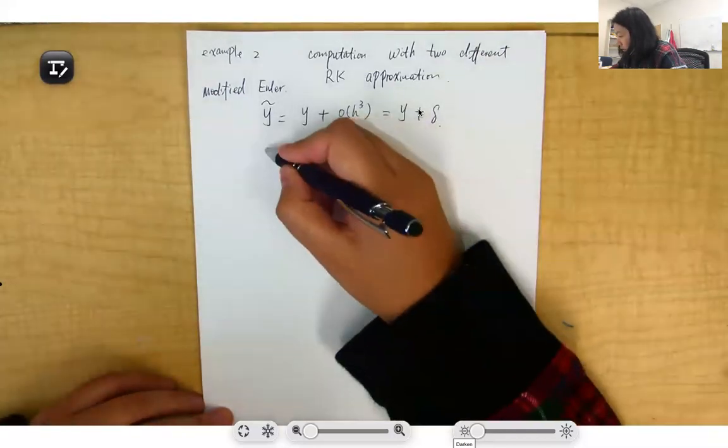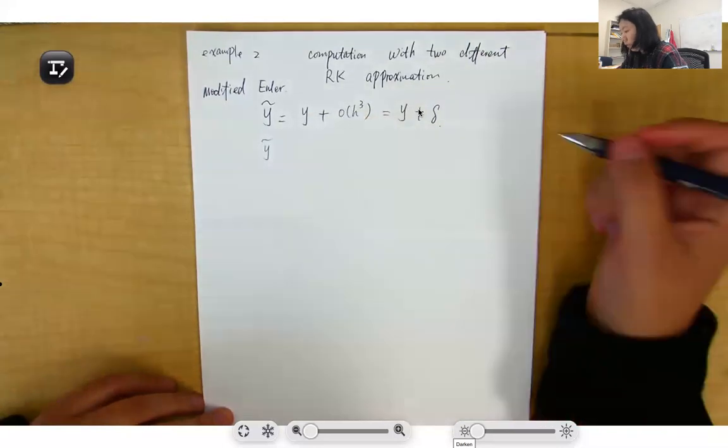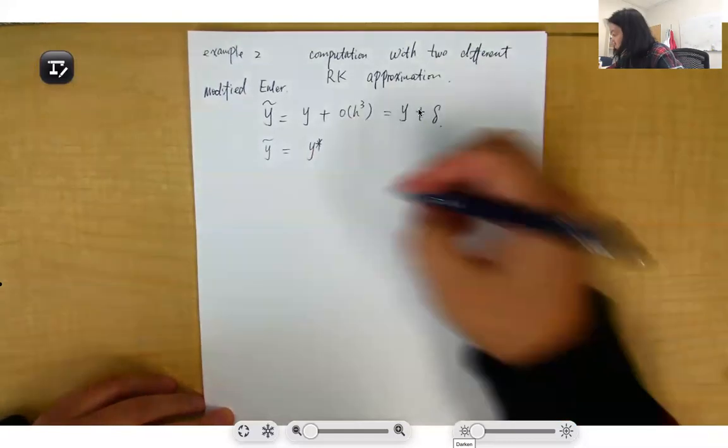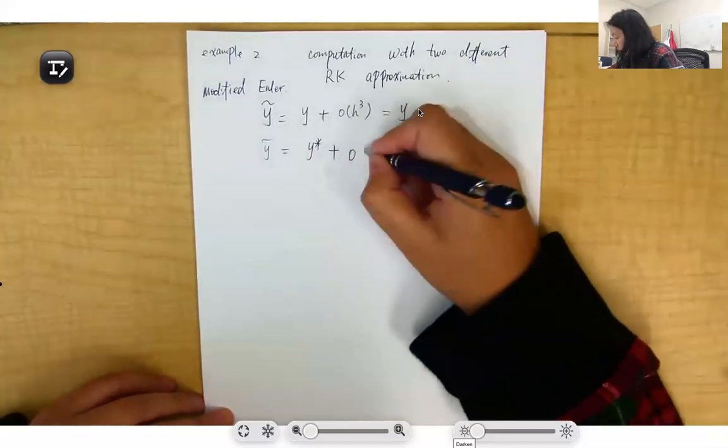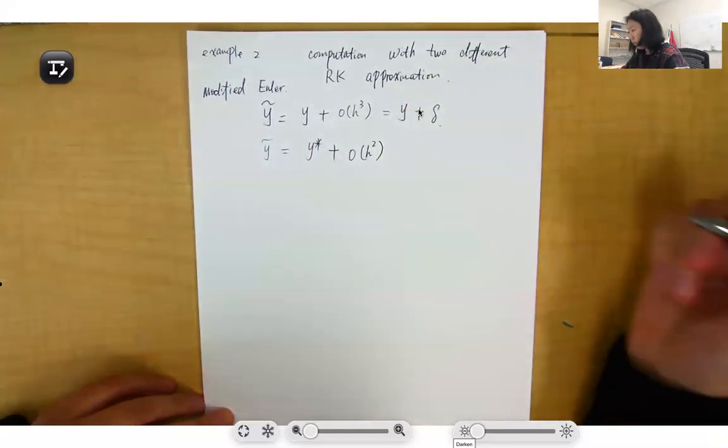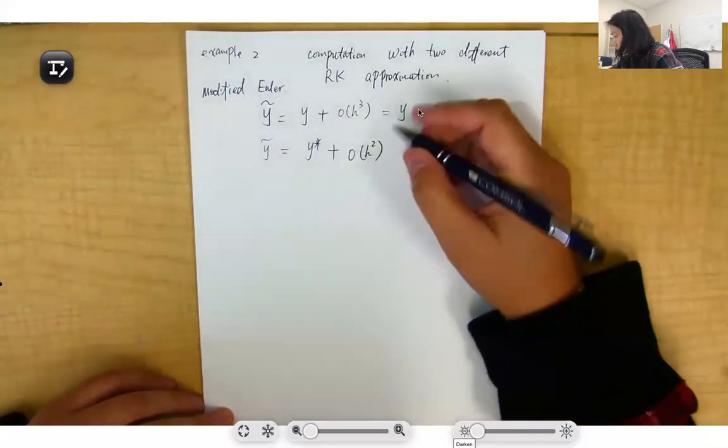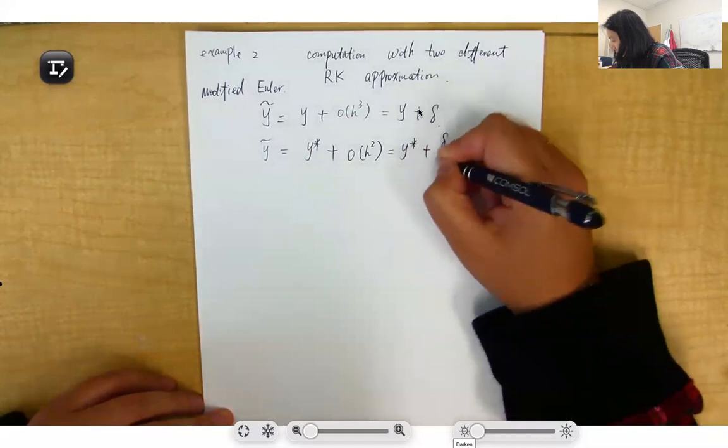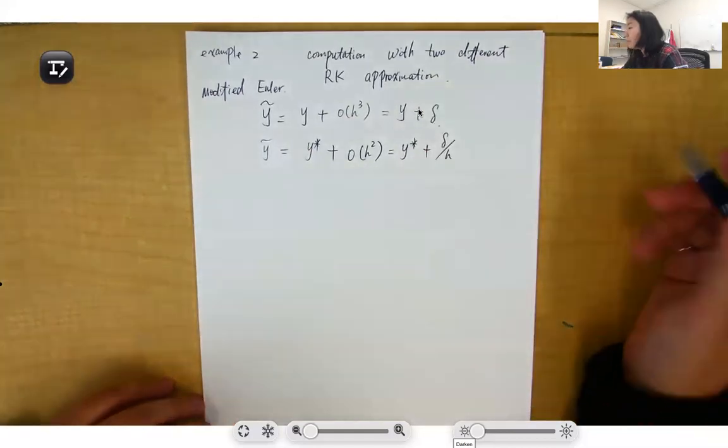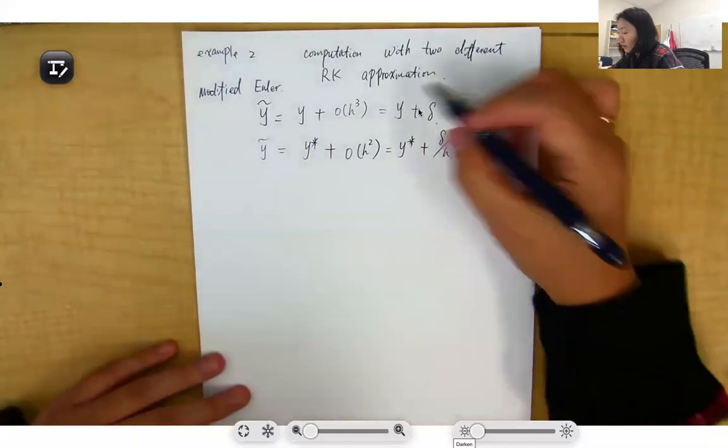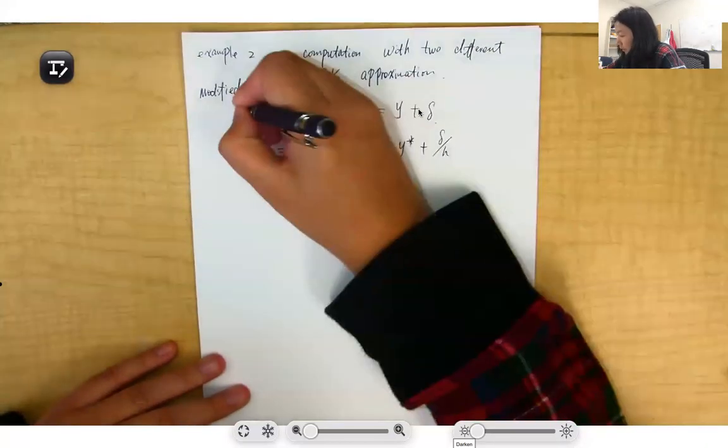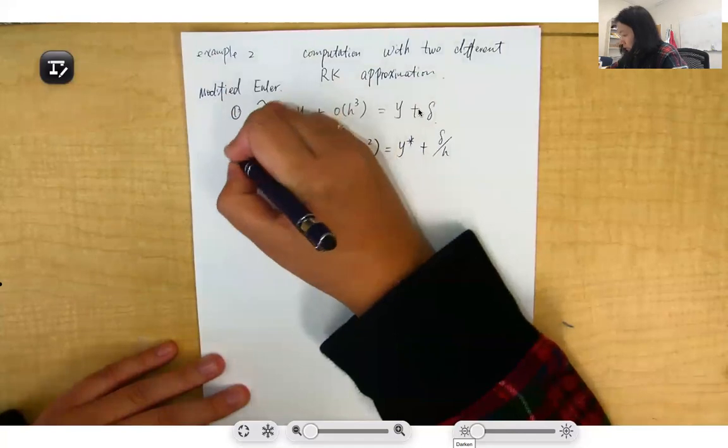How about y*? If I use Euler's method, let's use y* here. That will equal h squared with larger error. That equals y* + σ/h, where σ equals O(h^3). Then if you use equation 1 minus equation 2...